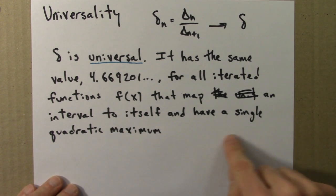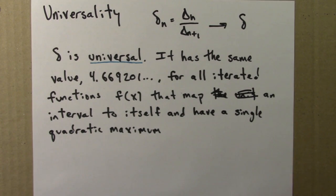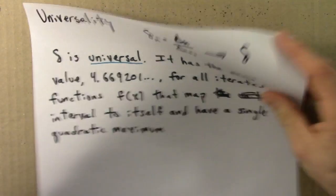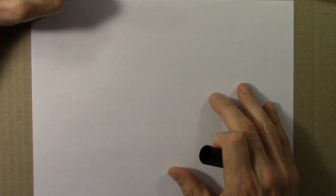Let me draw some pictures to illustrate this. What does it mean for a function to have a single quadratic maximum? Let's see. So, single quadratic maximum.